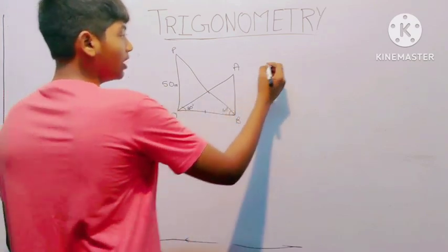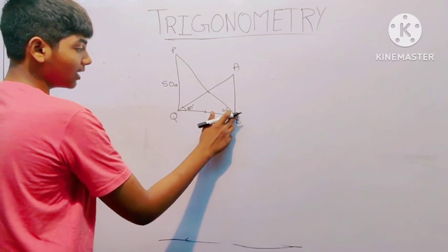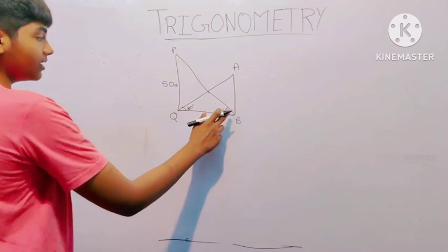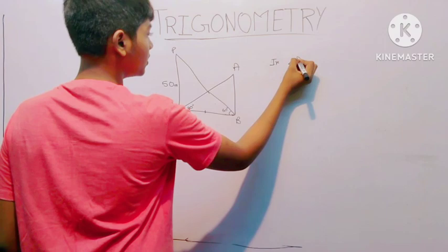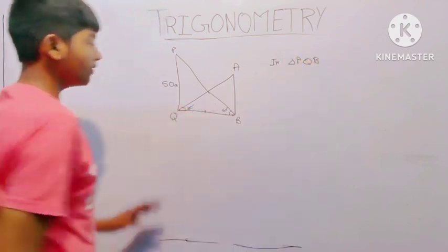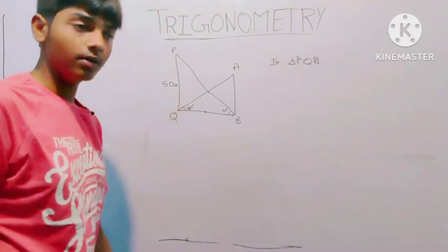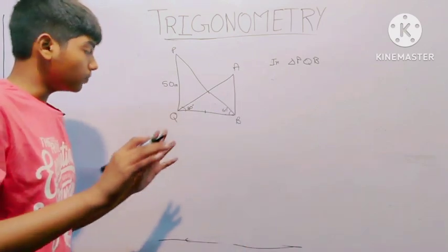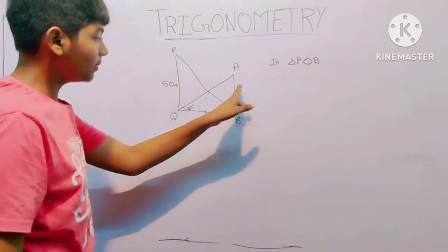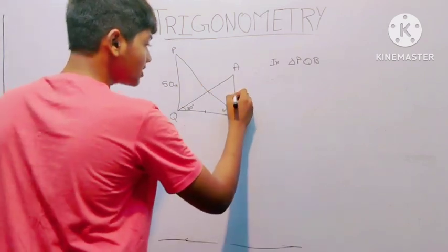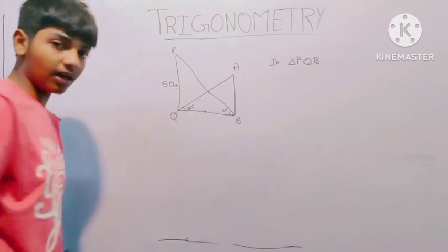We will find QB. We know that 60 degrees is this angle. So in triangle PQB, we have the height of the tower given and we need to find the base distance QB. If we can find the base distance, we can then find the height of the building.